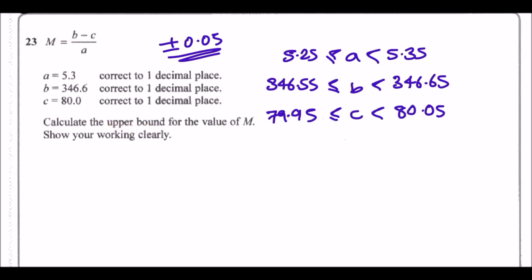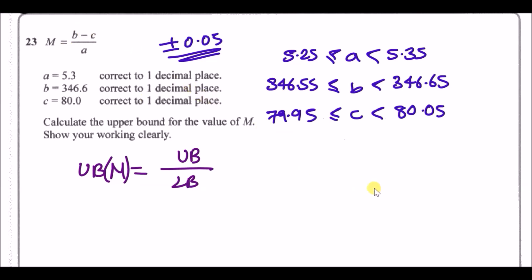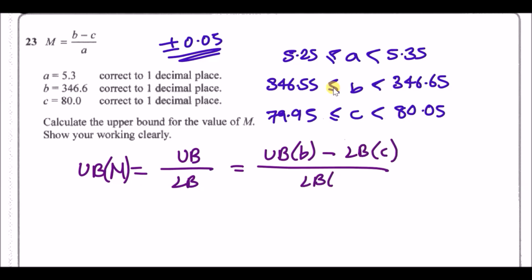To get the upper bound of m when dividing a fraction, you want the greatest ratio: upper bound of m = upper bound of the numerator over the lower bound of the denominator. To maximize (b − c), use the upper bound of b minus the lower bound of c, all over the lower bound of a.